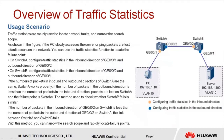Hi everyone. I'd like to show you how to configure traffic statistics collection. Traffic statistics collection is mainly used to locate network faults. As shown in the figure, if there is a long delay in the server response to requests from the PC, or if ping packets are lost, a fault may have occurred on the network. We can collect traffic statistics to locate the failure point.